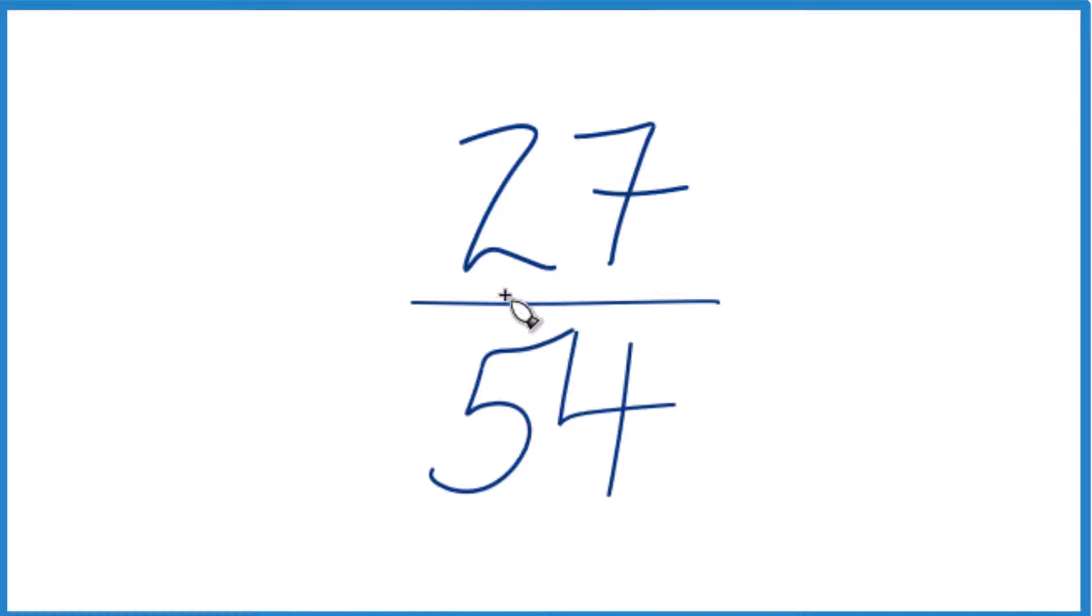What we need to do is find a number that goes into 27 and 54 evenly. And then what we can do is find an equivalent fraction, a fraction that has the same value as 27 over 54, and we've just reduced it to lowest terms.